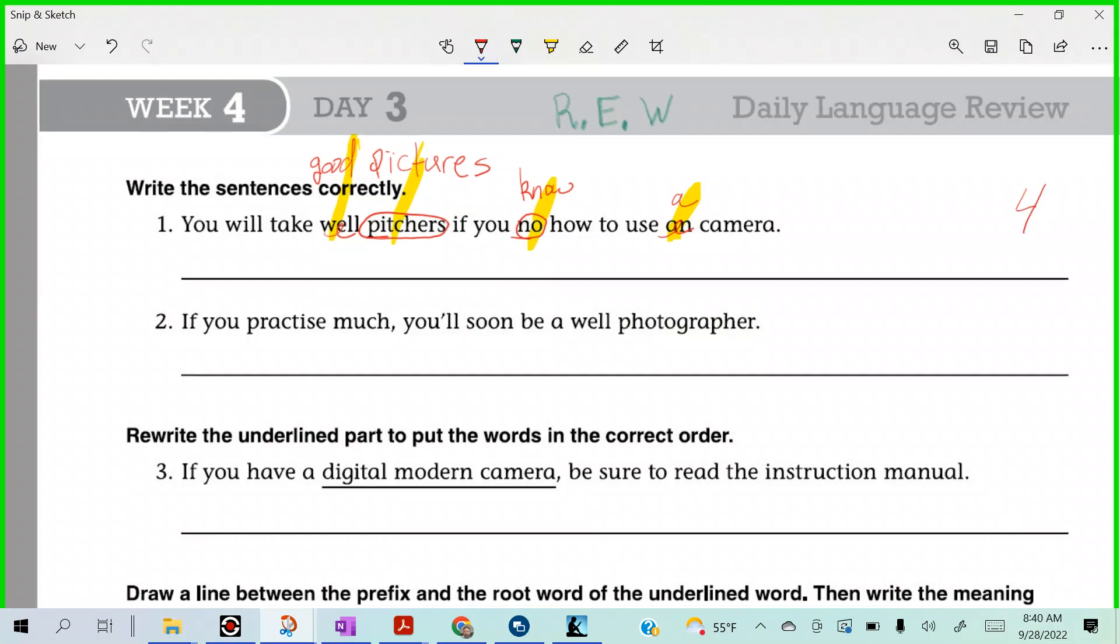All right, if you practice much, you'll soon be a well photographer. Man, that's hard to read them like that, right? Because they're just, it's so, how would you say it? You wouldn't say much. What would you say there, Koval? Yeah, how do you spell a lot? A space L-O-T, is that what you meant Koval? A lot is not one word, it's two words. A lot. If you practice a lot comma, you'll soon be a well photographer.